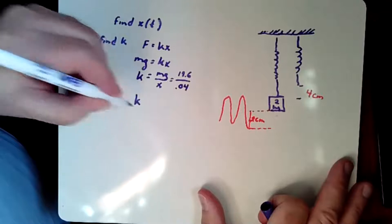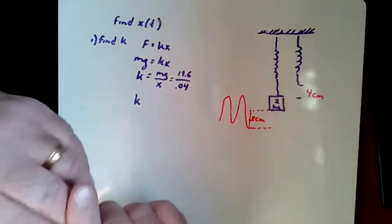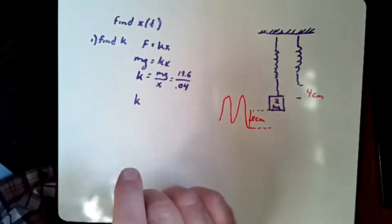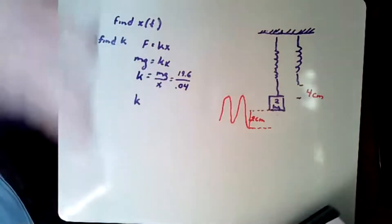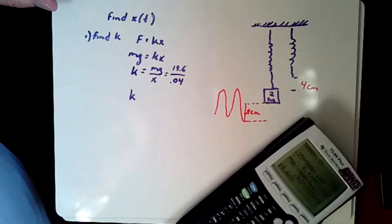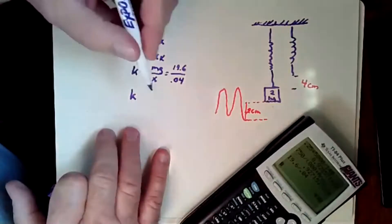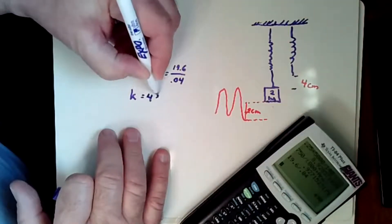And so the stretch is four centimeters. That's going to be written as 0.04, though, if we're going to get SI units. And then mass times gravity 2 times 9.8 is 19.6. Can somebody do that for me really quick? I realized I left my calculator over by the couch.